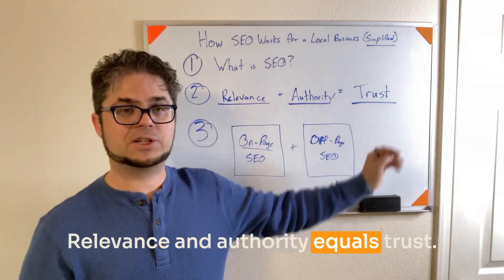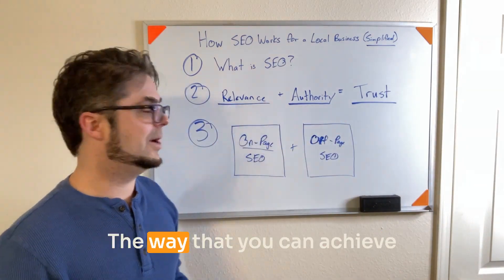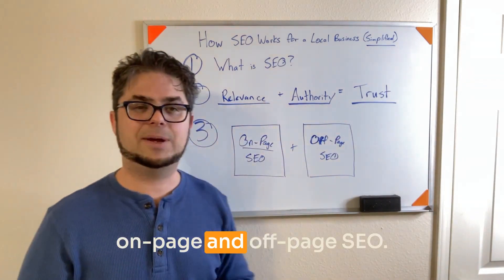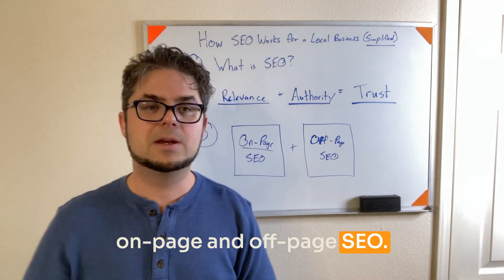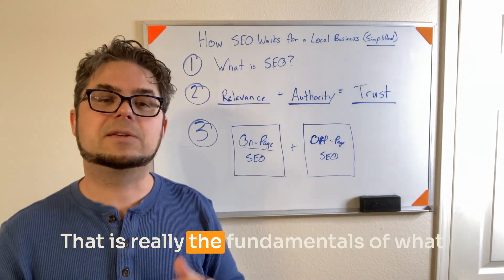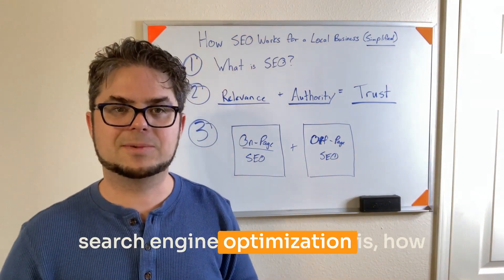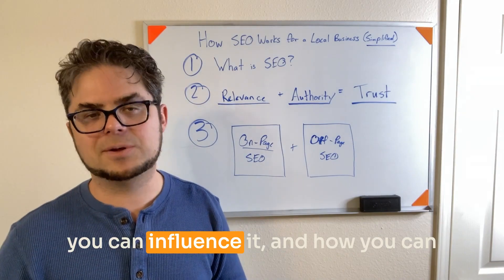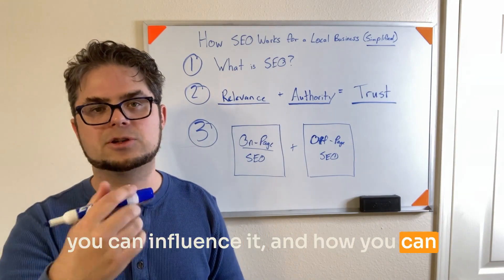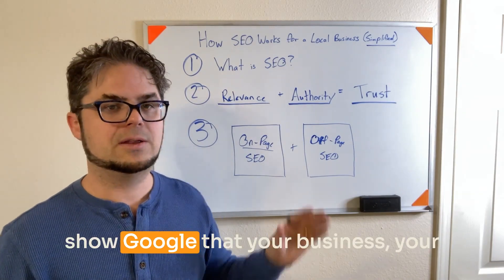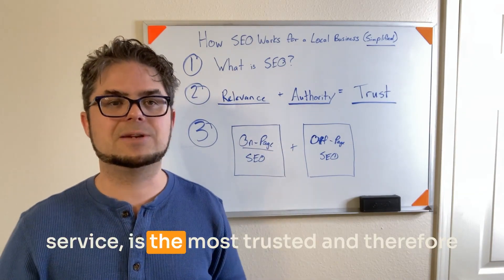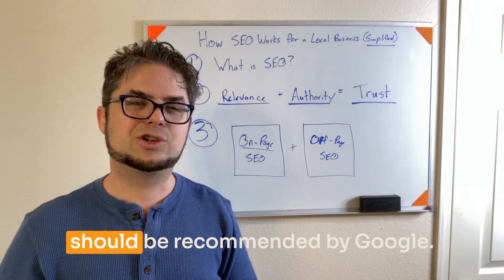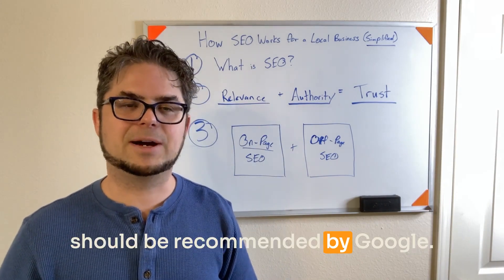Relevance and authority equals trust. The way that you can achieve that and show Google is through on-page and off-page SEO. That is really the fundamentals of what search engine optimization is, how you can influence it, and how you can show Google that your business and your service is the most trusted and therefore should be recommended by Google.